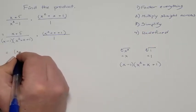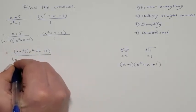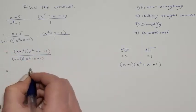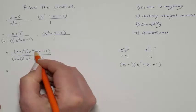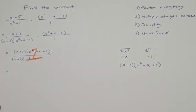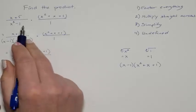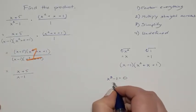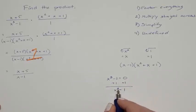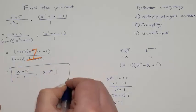Multiplying straight across gives (x + 5)(x² + x + 1) over (x − 1)(x² + x + 1) times 1. The entire parenthesis (x² + x + 1) appears on top and bottom, so they cancel. We are left with (x + 5) over (x − 1) as the simplified answer. For undefined values: x³ − 1 = 0 means x³ = 1, and taking the cube root gives x = 1. So x can never equal 1.